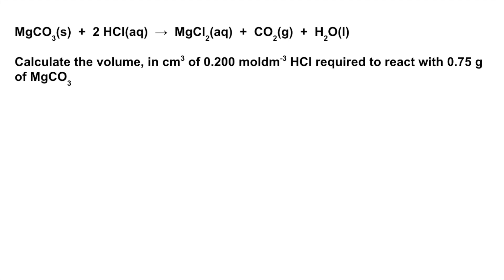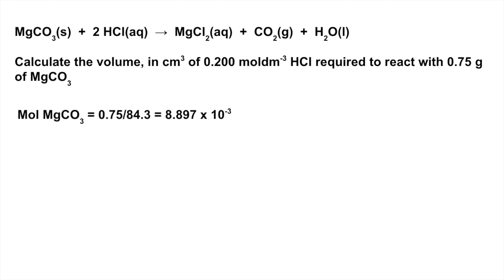For this question we're going to calculate the volume in cm³ of the acid required to react with that many grams of magnesium carbonate. The first thing I'm going to do is work out the moles of magnesium carbonate — mass over MR — which gives 8.897 × 10⁻³. Then I'll use the mole ratio in the equation to work out how many moles of hydrochloric acid we need, which is twice as many.